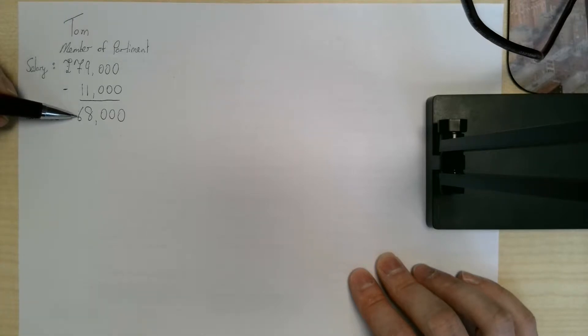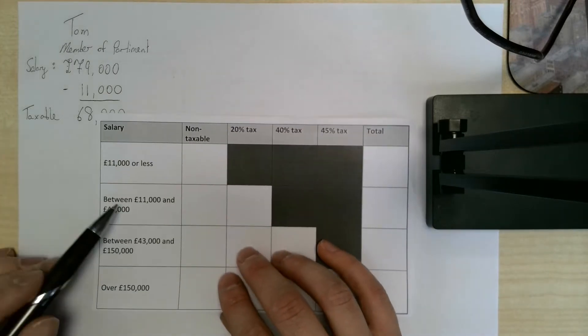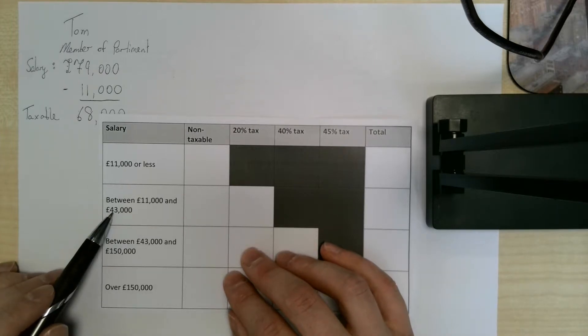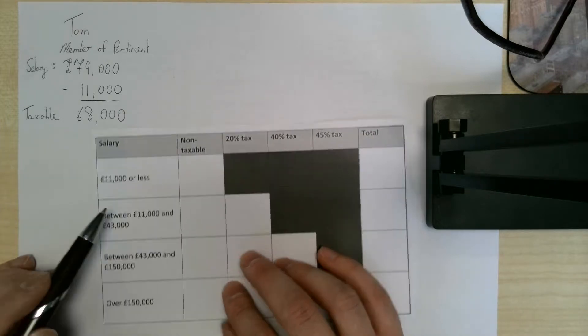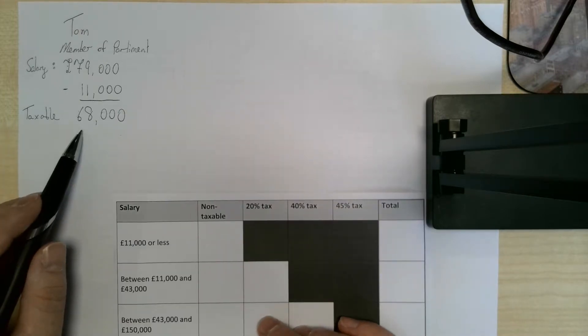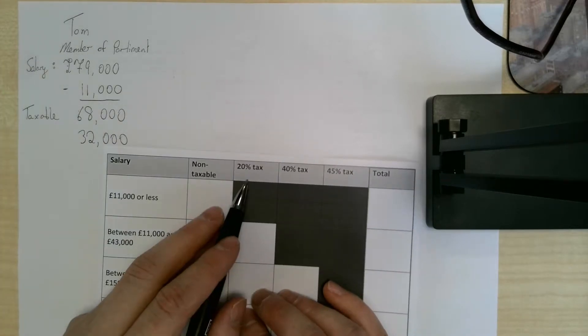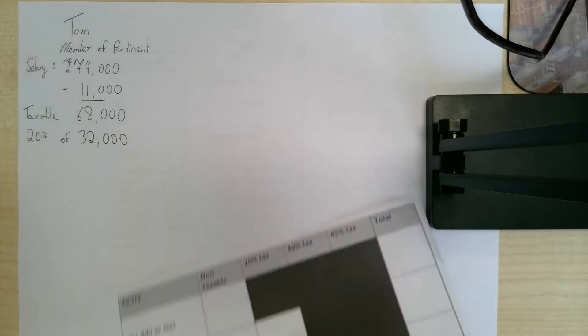The £11,000 has been put aside, he doesn't have to pay tax on that. This is the part of his salary he's going to pay tax on. Now from here it gets slightly complicated. We're looking at the part of his salary that's between £11,000 and £43,000 - that's £32,000 here which he does have. So there's £32,000 here that he's going to pay 20% tax on.